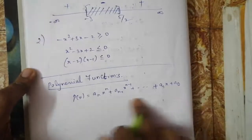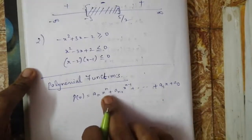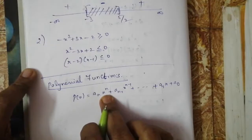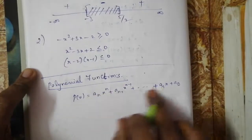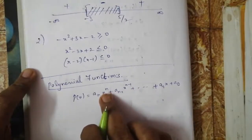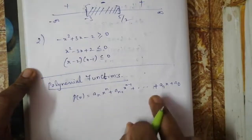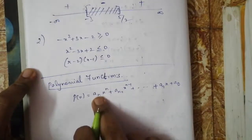The degree of the polynomial is the highest power of x. The highest power of x we call the degree of the polynomial. This is called an n-degree polynomial.